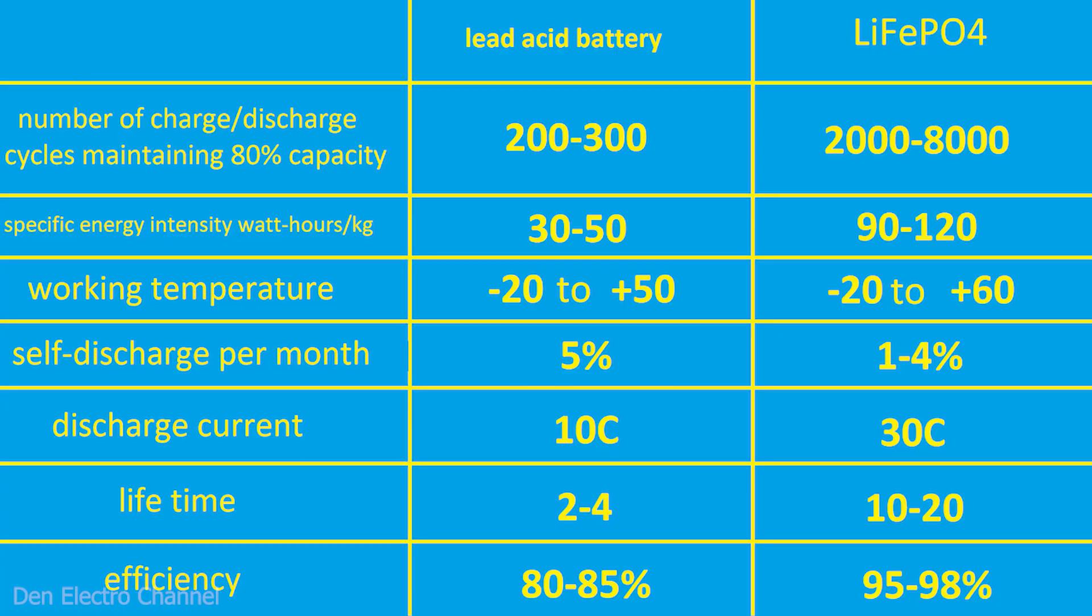If anyone doesn't know why the whole world is switching to lithium iron phosphate batteries, then here's a table for you. These are comparative characteristics of lead acid batteries and lithium iron phosphate batteries. Here you can clearly see that lithium iron phosphate batteries win in all respects. Therefore, if the battery in the UPS has become unusable, then I see no reason to put a lead acid battery back there.